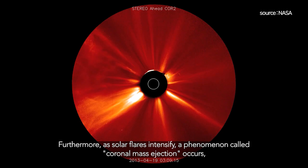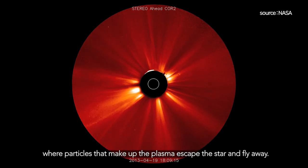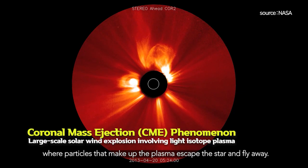Furthermore, as solar flares intensify, a phenomenon called coronal mass ejection occurs, where particles that make up the plasma escape the star and fly away.